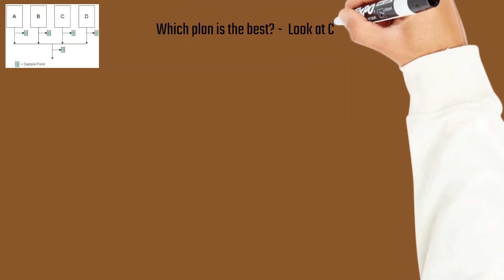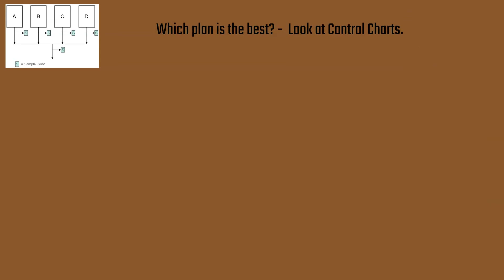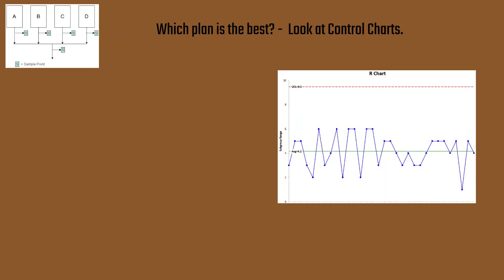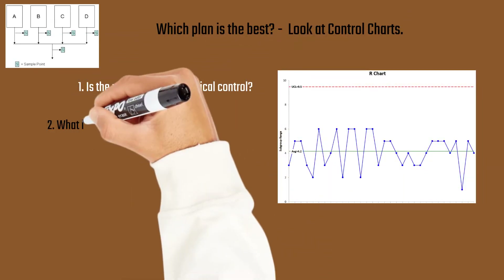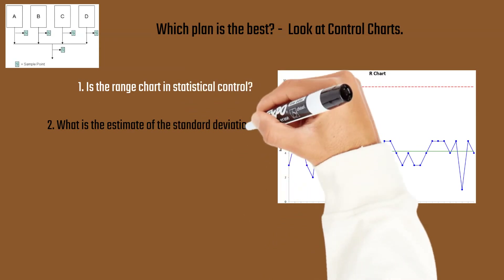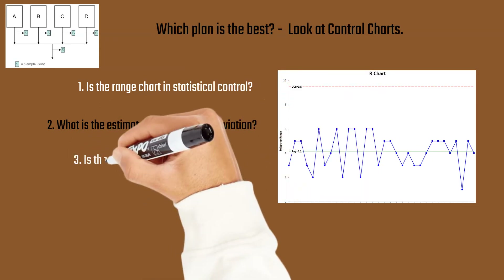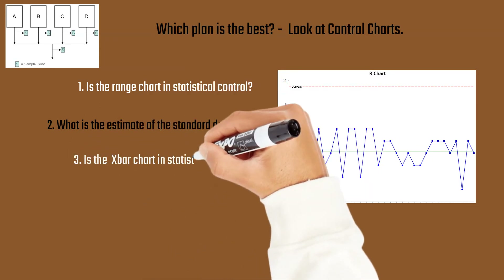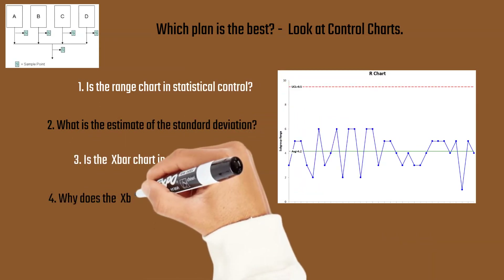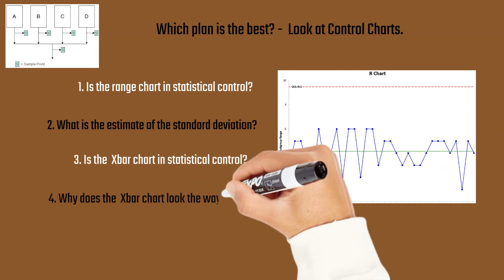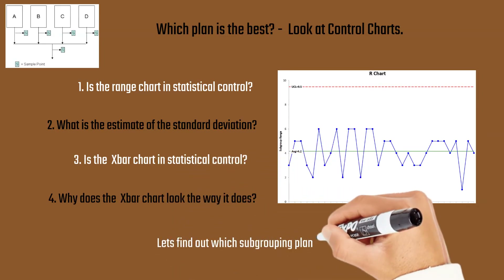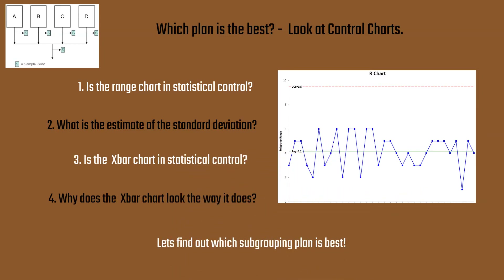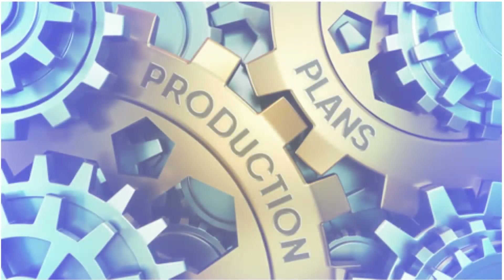So those are our three plans. Which plan is best? We're going to determine that by looking at the control charts and answering four questions: Is the range chart in statistical control? What's the estimate of the standard deviation? Is the X-bar chart in statistical control? And why does the X-bar chart look the way it does?